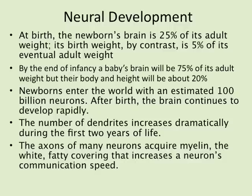By the end of infancy, a baby's brain will be 75 percent of its adult weight, but the body will only be about 20 percent developed. So in the first year of life, the vast majority of energy is going straight to brain development. Newborns enter the world with an estimated 100 billion neurons, and after birth the brain continues to develop rapidly. The number of dendrites increases dramatically during the first two years — the more stimulation and interaction a child has, the more neural connections are formed.